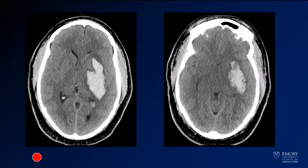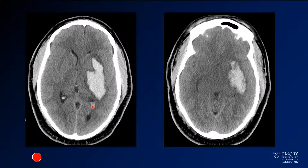What you see is some axial CT images through the level of the basal ganglia. There's a big hemorrhage here on the left. It's involving both the putamen and the thalamus, essentially eradicating the posterior limb of the internal capsule. There is also a little bit of intraventricular hemorrhage, and this is extending adjacent.